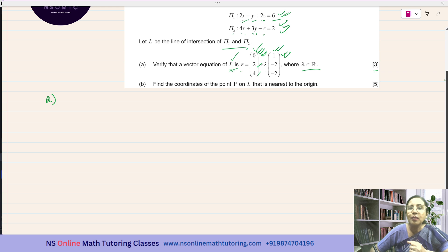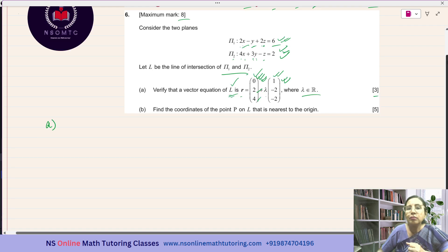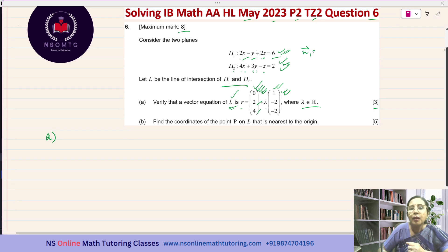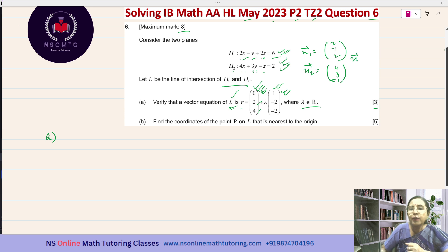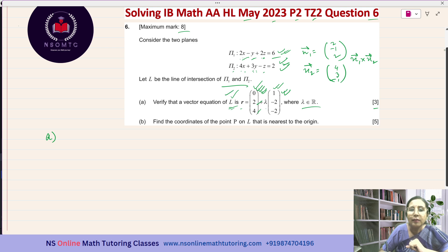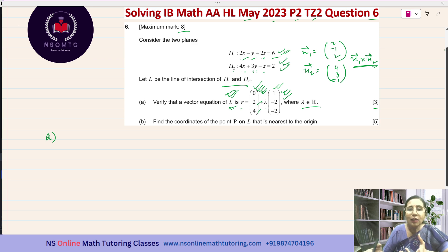Then you can show that this is the direction vector of line L. We know the normal vector to plane π1 is (2, negative 1, 2), and the normal vector to plane π2 is (4, 3, negative 1). If we compute the vector product n1 cross n2, that gives a vector perpendicular to both n1 and n2, so it will be parallel to line L. Hence this vector n1 cross n2 and the direction vector (1, negative 2, negative 2) should be parallel. If we can prove that, we can say this is the vector equation of line L, the line of intersection of the two planes.